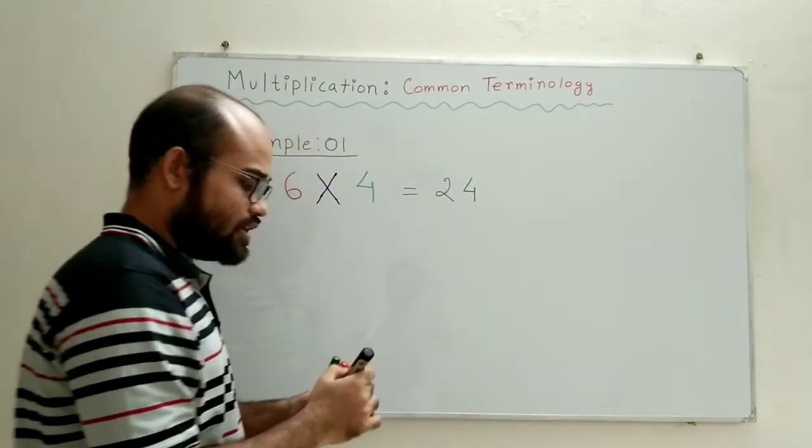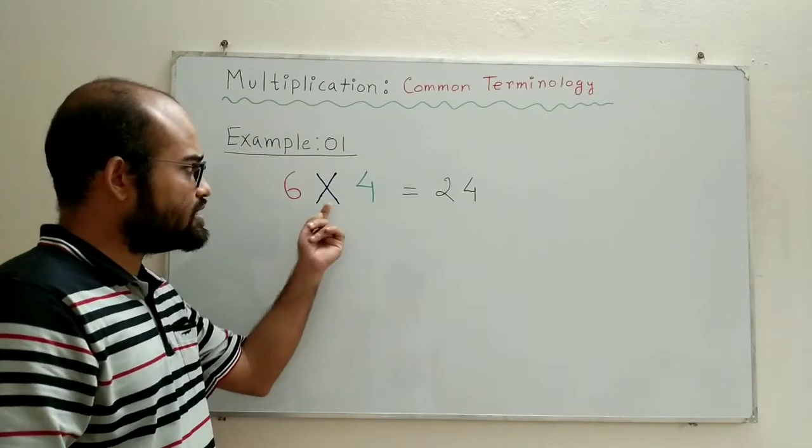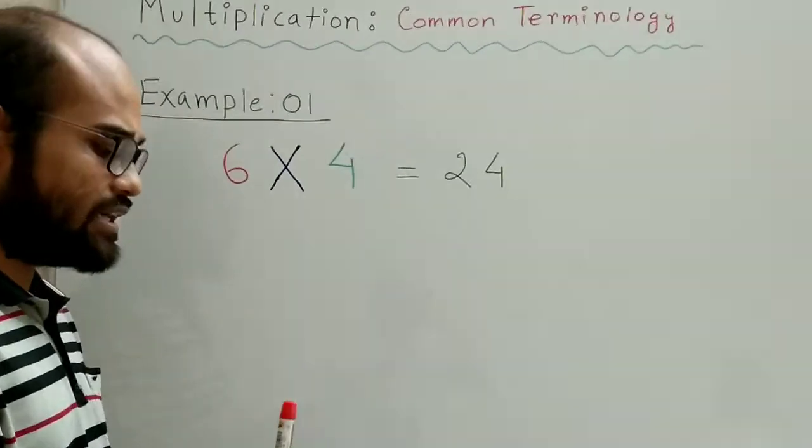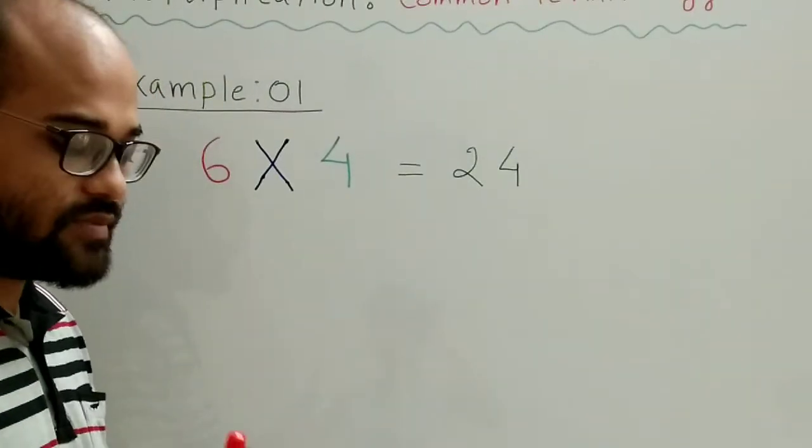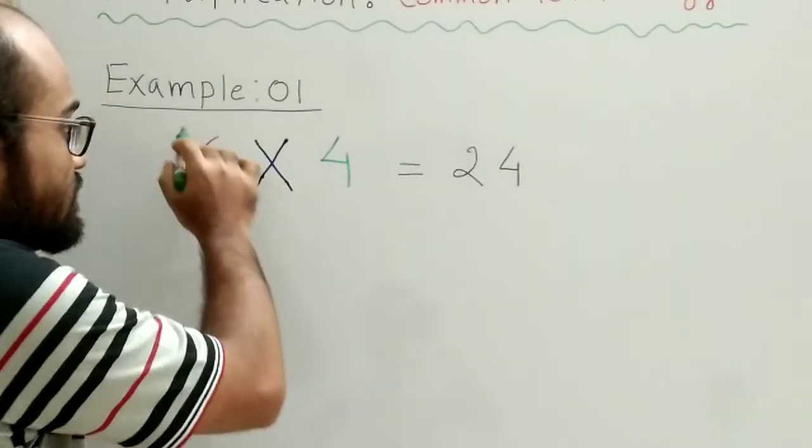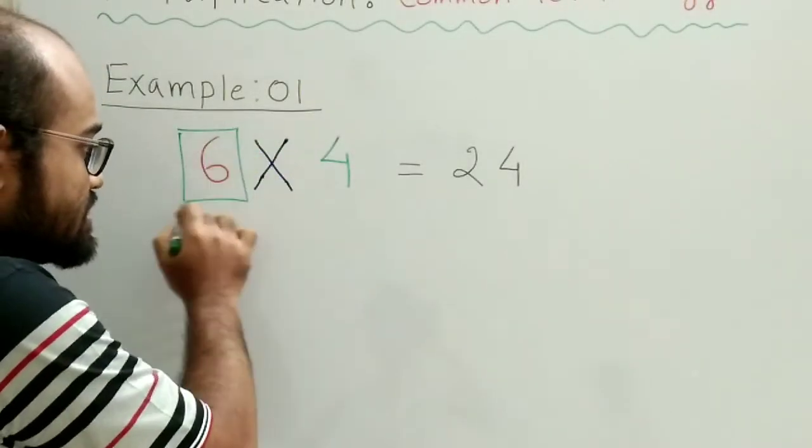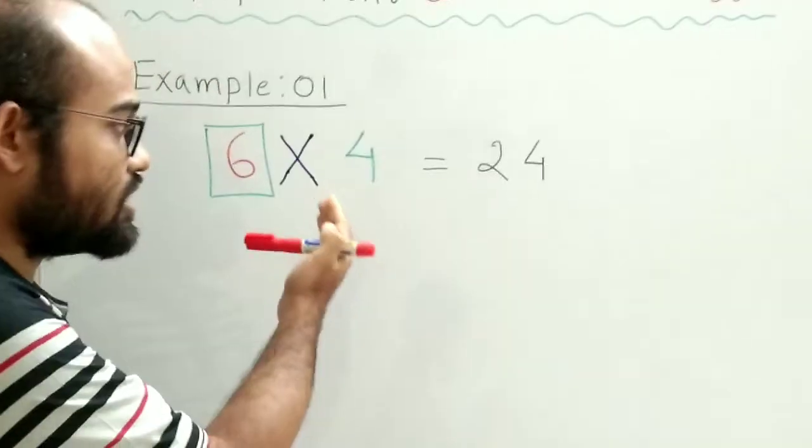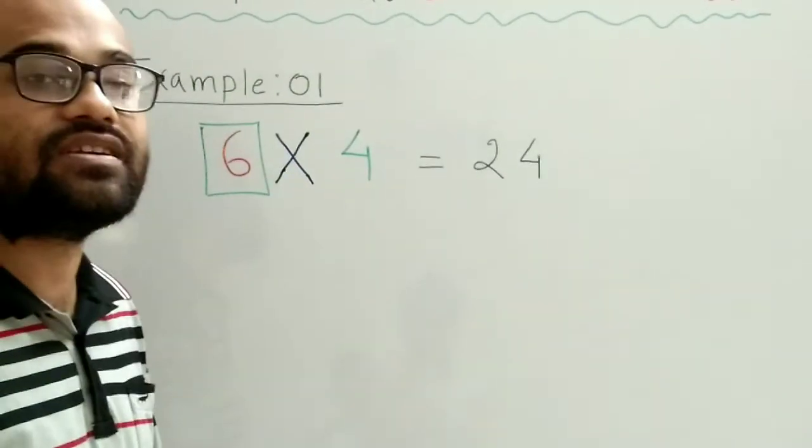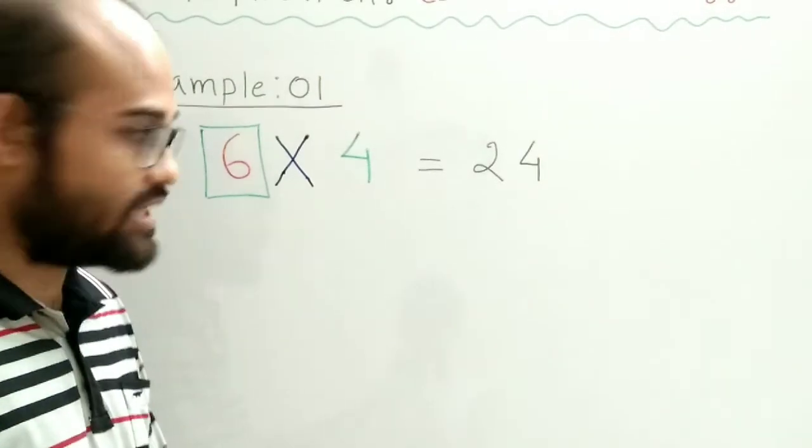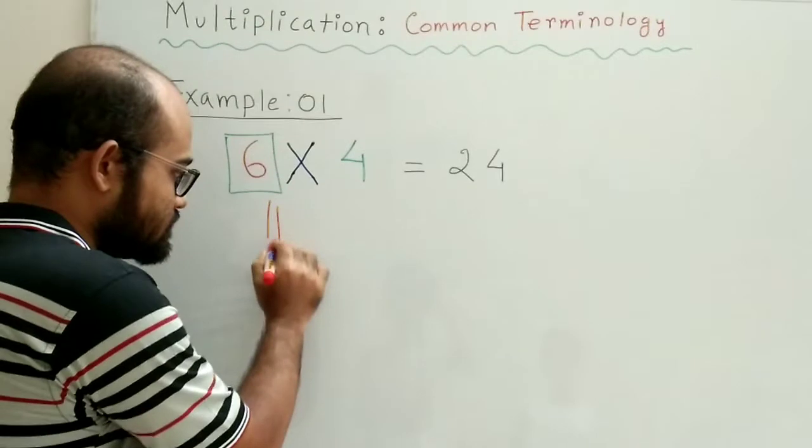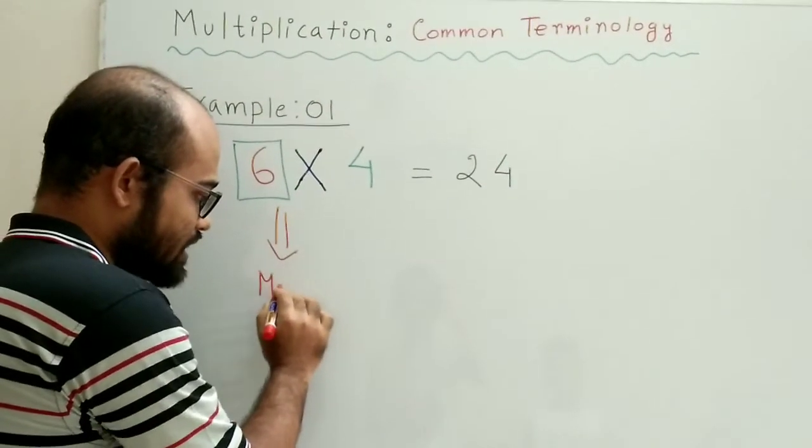Now if we pay our attention to the spot immediately before the multiplication sign, what do we find? We find that that spot is being occupied by number 6. So numbers such as 6 which occur immediately before the multiplication sign have a special name. They are called multiplicand.